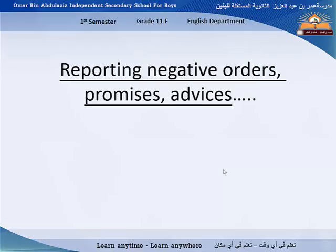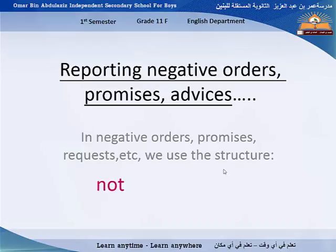When reporting negative orders, promises, or advice, we use the structure: 'not' plus 'to' plus infinitive. For example: 'Do not be late again.' The teacher told the students not to be late again. And if the doctor advised you not to smoke, in direct speech she says 'Don't smoke a lot,' but in reported speech: the doctor advised the patient not to smoke a lot.